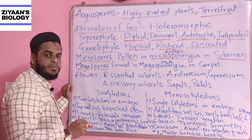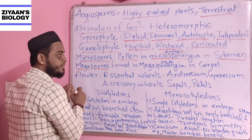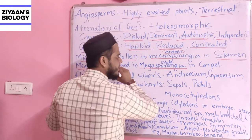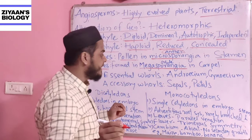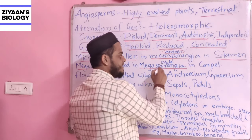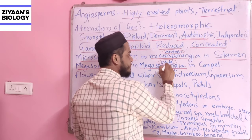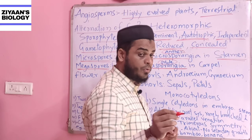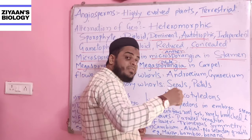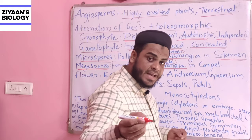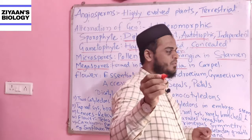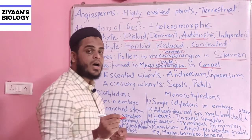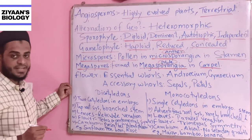The female spore is called the megaspore, formed in the megasporangia, which is also called the ovule. This ovule after fertilization will be called a seed. The ovule or megasporangia is formed in the carpel.